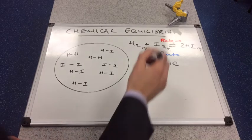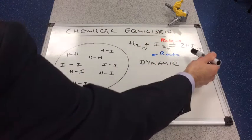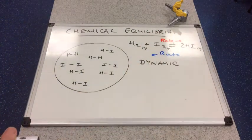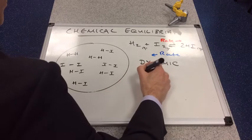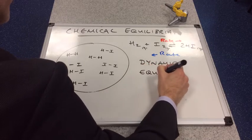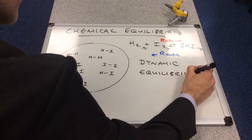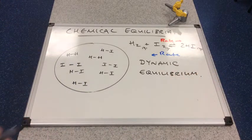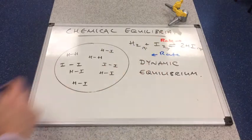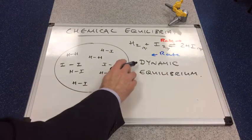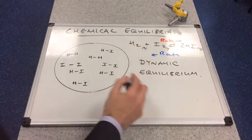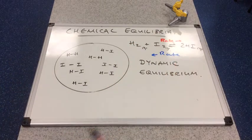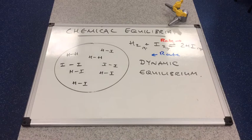When the rate of the forward reaction equals the rate of the reverse reaction, we say that this is in dynamic equilibrium. Remember, it's a continuous process - that's the dynamic part. The rate of the forward reaction equals the rate of the reverse reaction - that's the equilibrium part.